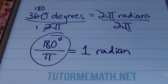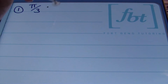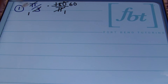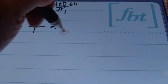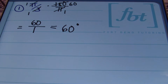Let's start with problem number 1. Our given angle is π/3 radians. To convert to degrees, we multiply by the conversion factor 180/π. Simplifying before multiplying: π cancels, and 3 goes into 180 sixty times. Multiplying straight across gives us 60/1, which equals 60 degrees. So π/3 radians converts to 60 degrees.